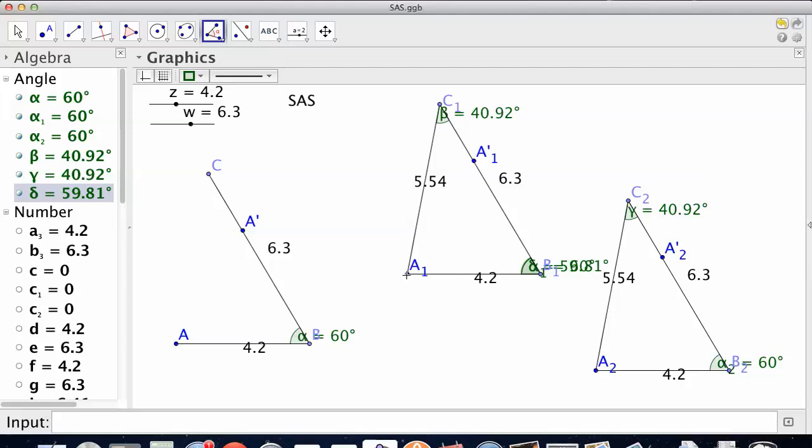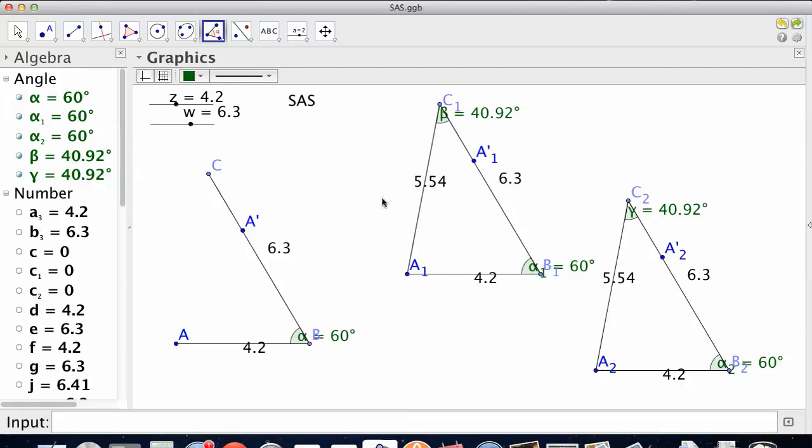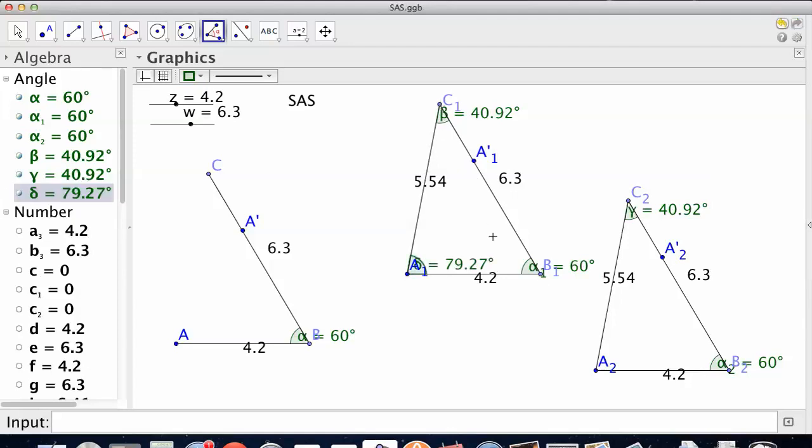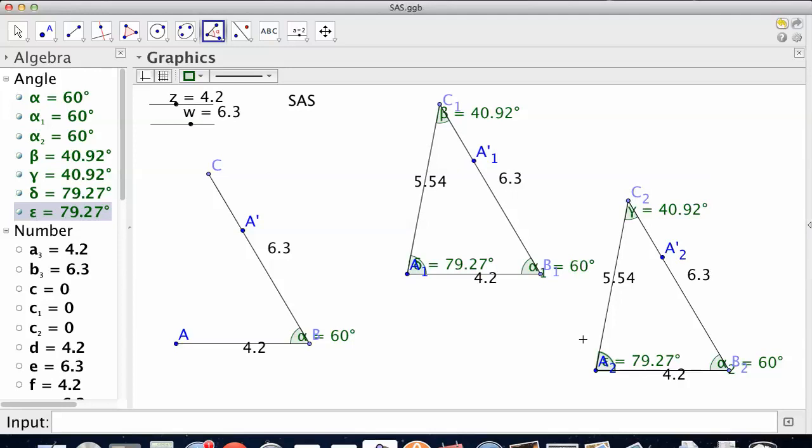I already did 60. Command-Z, undo that. 79.27. It's a little rounding thing with the .27 and the .92. Hey, look. All three parts, all six parts are the same.